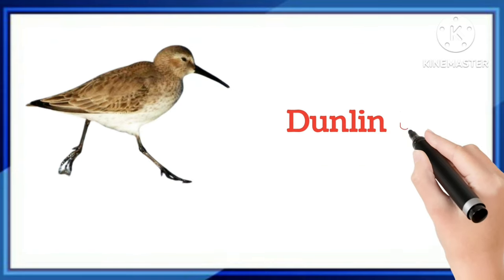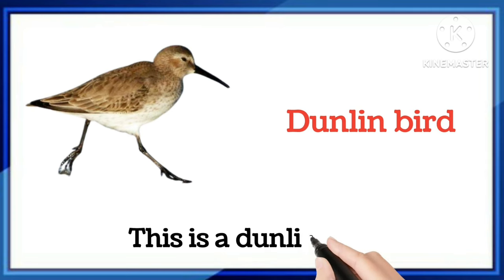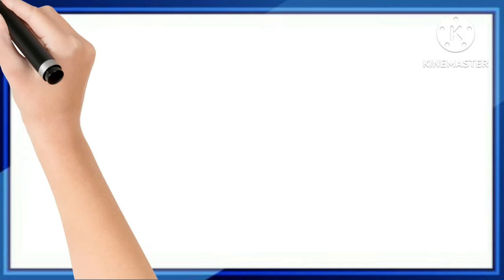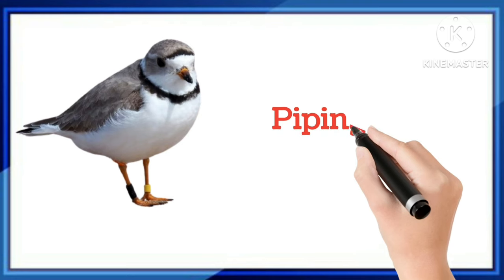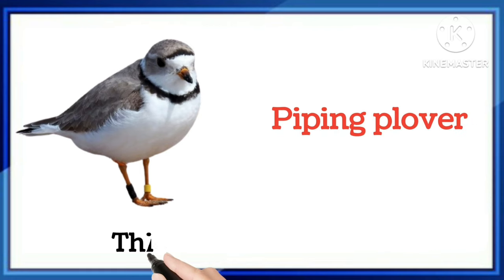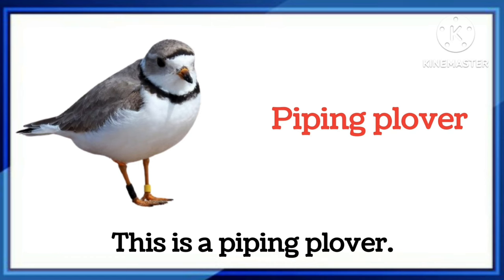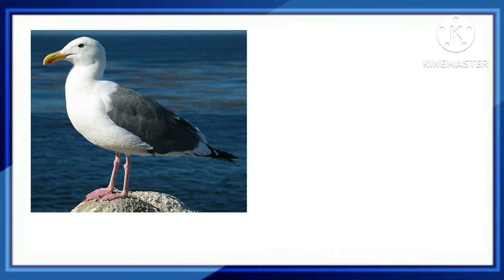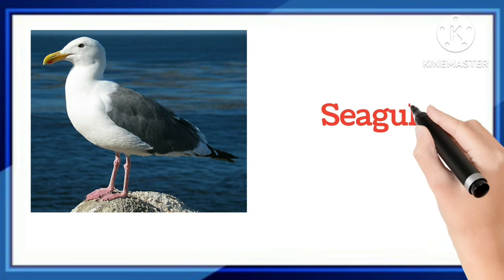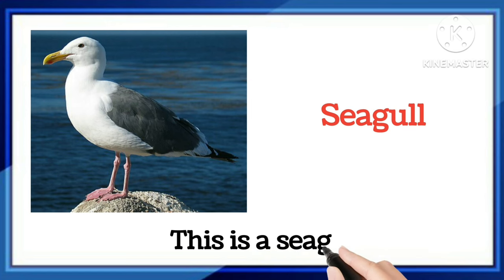And which word is this, kids? This is a dunlin bird. Once more: this is a dunlin bird. Which word is this, kids? This is a piping plover. Once more: this is a piping plover. Which word is this, kids? This is a seagull. This word is seagull.